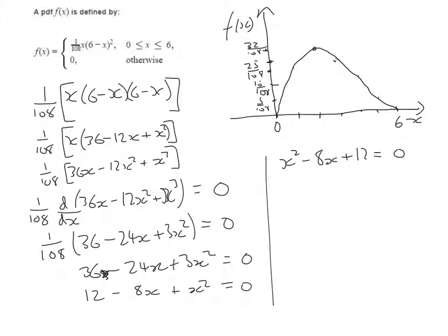To factorize this, I can see that it's able to be factorized. We get (x - 2)(x - 6) = 0. So either x = 2 or x = 6. Those are the two turning points of this cubic graph.